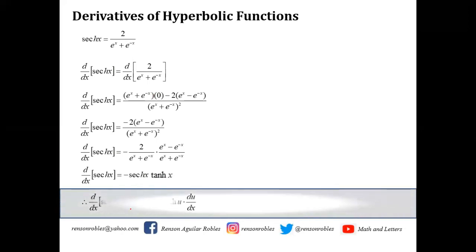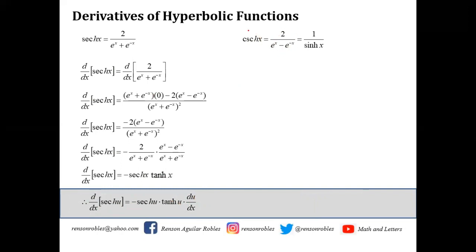This fraction can be written as the product of -2/(e^x + e^(-x)) times (e^x - e^(-x))/(e^x + e^(-x)), where 2/(e^x + e^(-x)) is sech(x) and (e^x - e^(-x))/(e^x + e^(-x)) is tanh(x). So the derivative of sech(x) is -sech(x)·tanh(x), and in general the derivative of sech(u) is -sech(u)·tanh(u)·du/dx.